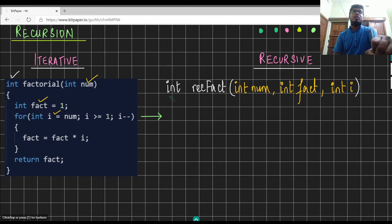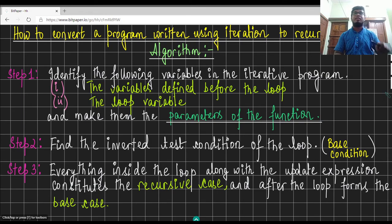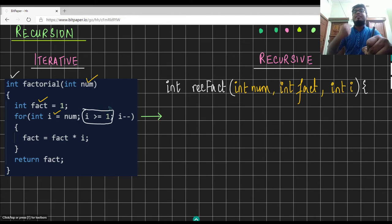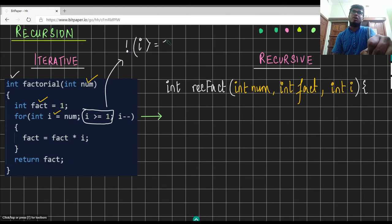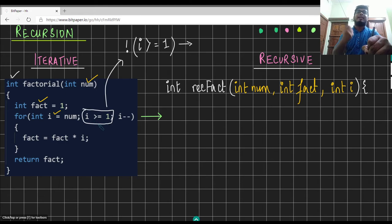Moving on to the second step: we need to identify the base condition. To identify the base condition, we need to figure out what the test condition is in the loop and invert it. Inside our loop, the test condition is i greater than or equal to one. We need to invert this condition. If you observe carefully, i less than one is the inverted condition for i greater than or equal to one.